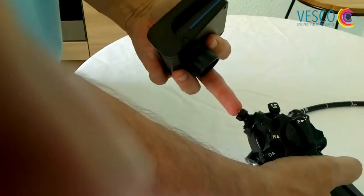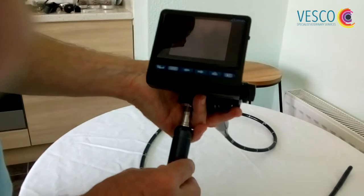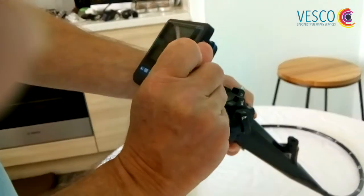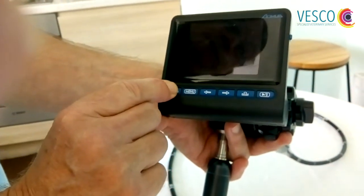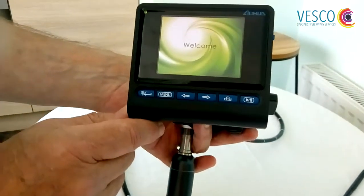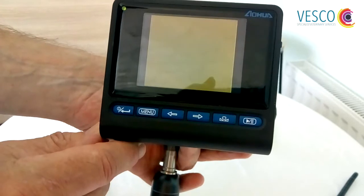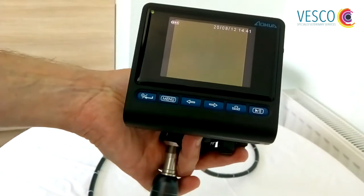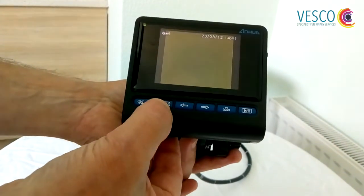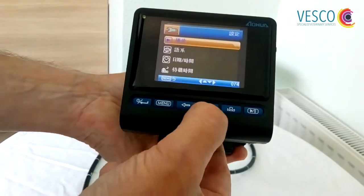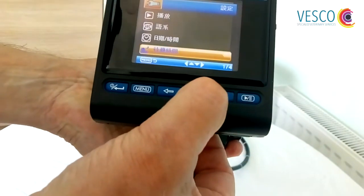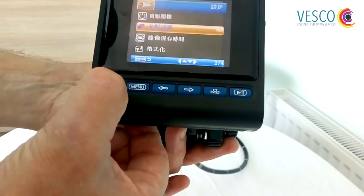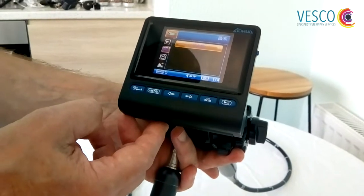Once we have the viewing screen attached, first turn on at the side to the on position, and then press the power button on the front. You can see you get a very nice welcome screen and it will go to a live screen. What I want to go through first of all is to make sure that it is set up in the correct language. To do that, press menu and then scroll down using these keys here.